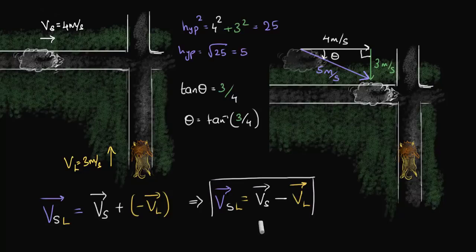And the reason I want to box this expression is because this is very similar to what we got in one dimension. Do you remember in one dimension, we got V_AB equal to V_A minus V_B? Well, guess what? We got the exact same result. V of SL equals V_S minus V_L.